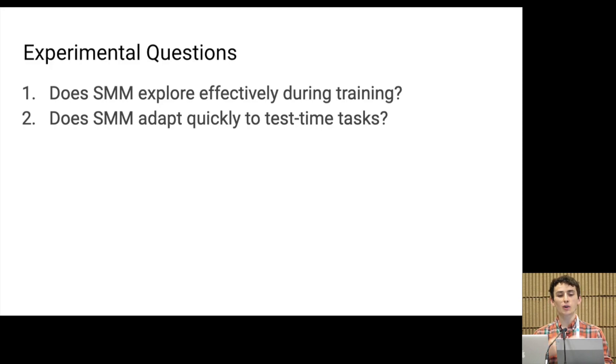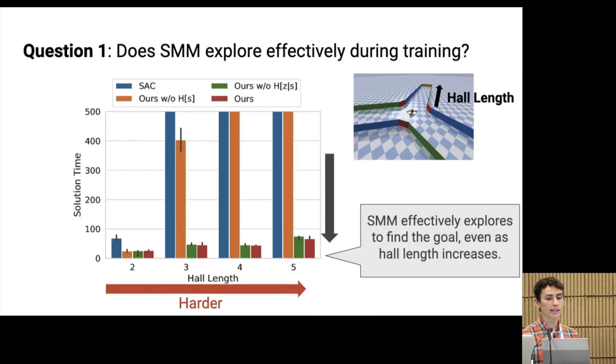The first question is to study whether the exploration provided by state marginal matching can accelerate solving a single task. To answer this question, we look at the locomotion environment. We hide a goal at the end of one of these hallways and define our target distribution to put high mass around the goal. The agent doesn't know in what hallway the goal is located, so it must explore to find the goal. During training, we're going to count the number of episodes until the agent finds the goal. In the plot above, we plot the number of episodes that it took to find the goal, so lower is going to be better. And we see that our method, shown in red, can find the goal even as we increase the hallway length, making exploration harder.